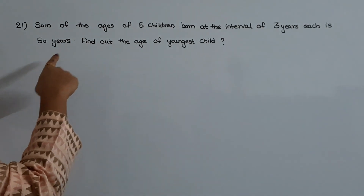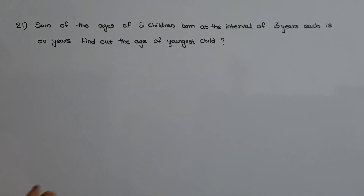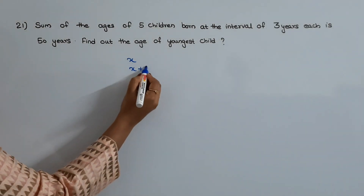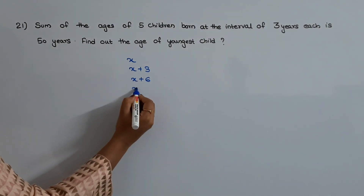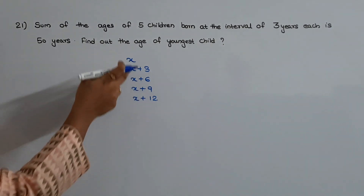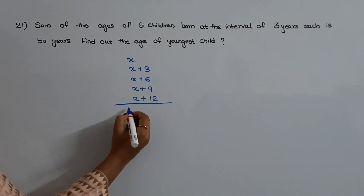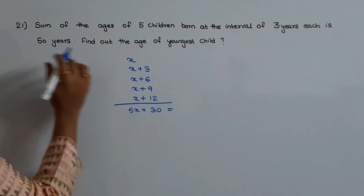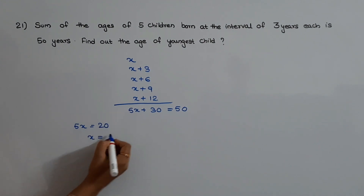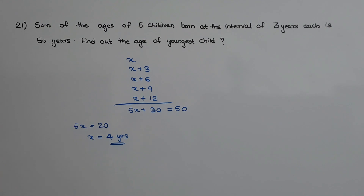The next question: the sum of the ages of 5 children born at intervals of 3 years each is 50 years. Find the age of the youngest child. Let the youngest child's age be x. Then the five children's ages are x, x plus 3, x plus 6, x plus 9, and x plus 12. Their sum is 5x plus 30, which equals 50. So 5x equals 20, and x equals 4 years. The age of the youngest child is 4 years.